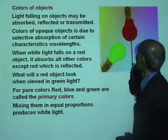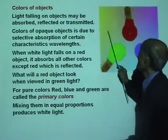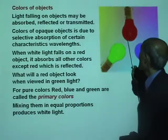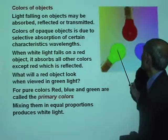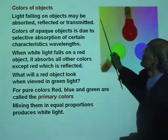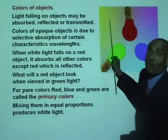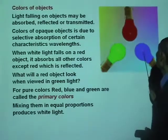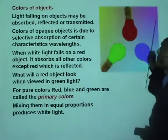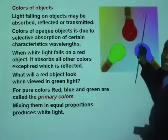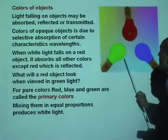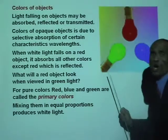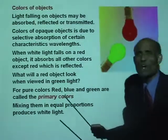And you can also see in the background what will happen if you mix red and green — red and green gives you yellow. And red and blue gives you magenta. And green and blue gives you a color called cyan or peacock blue.